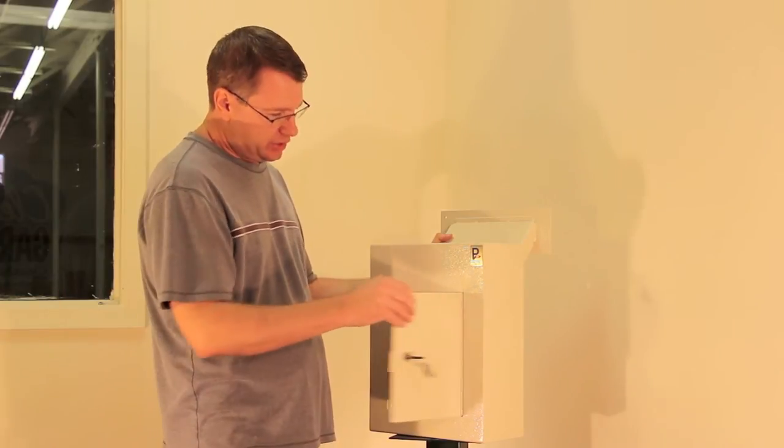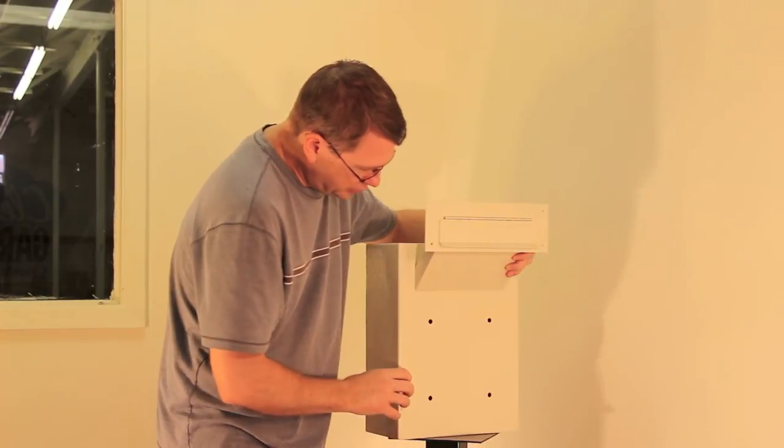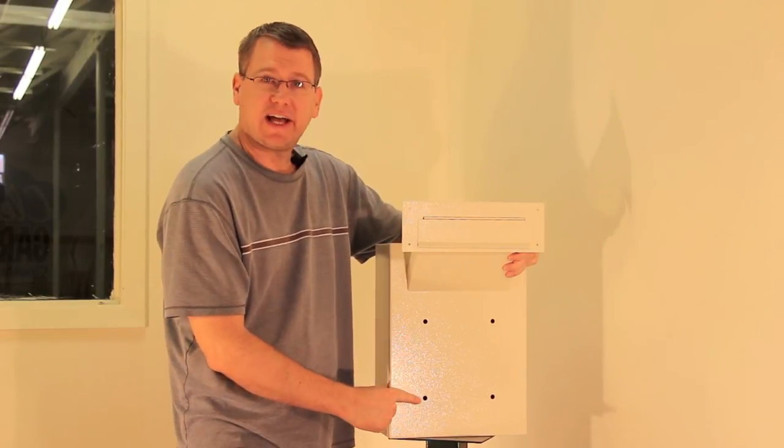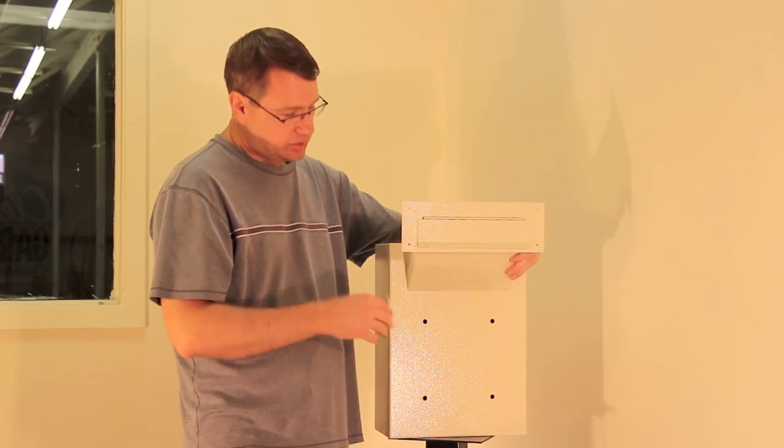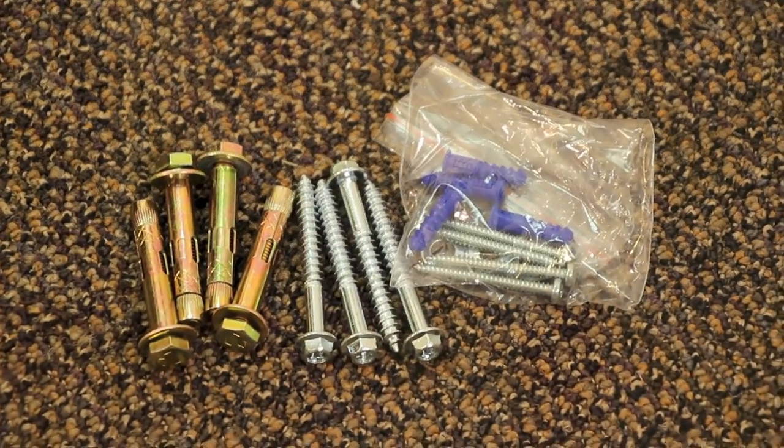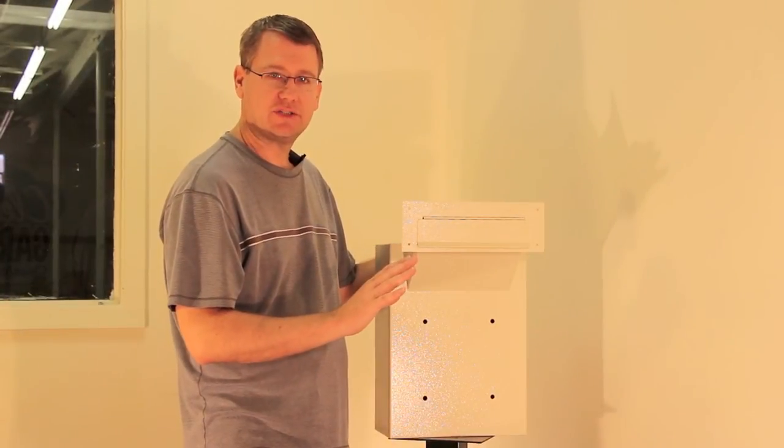It's got pre-drilled holes. I'll show you in the back here. So you can attach it to masonry, sheetrock, wood. It does include screws, actually three different types. So all you're really going to need to do is set it up against the wall and attach it to the wall.